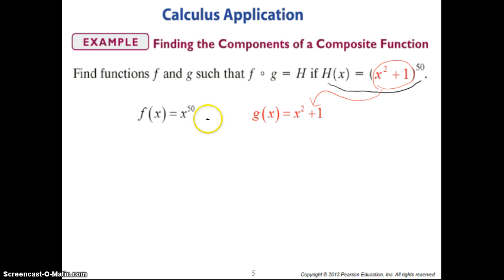So your outer function, f of x, is just x to the 50th. And do you see that if you take f of g of x, you take g of x and plug it into the x in f of x, you get x squared plus 1 raised to the 50th power. So in this particular case, your g of x would be x squared plus 1, and your f of x would be x to the 50th.